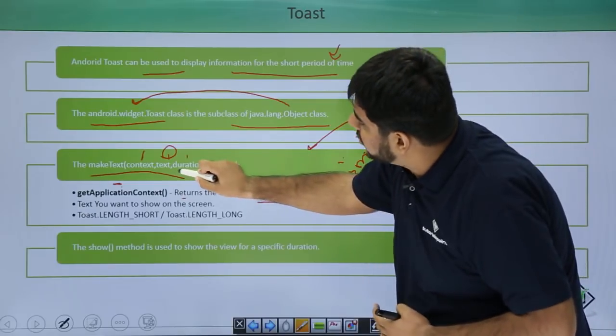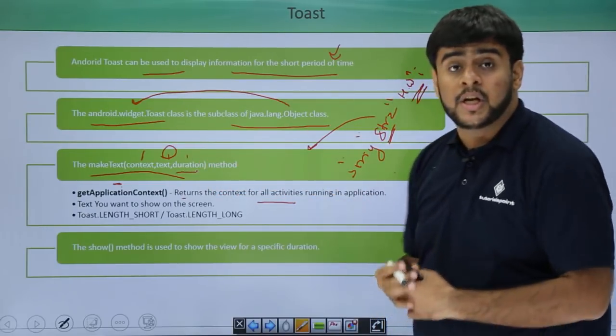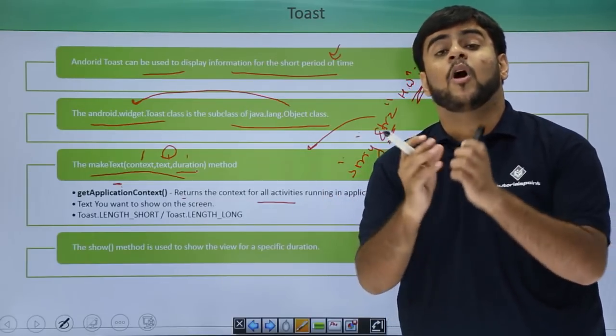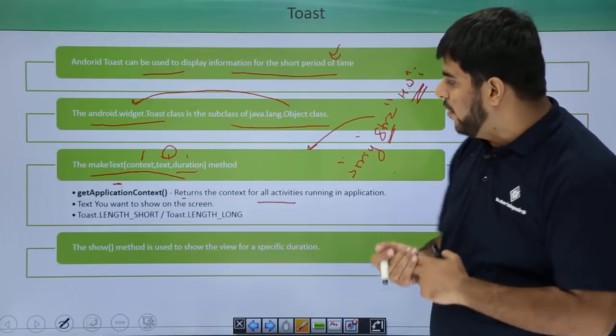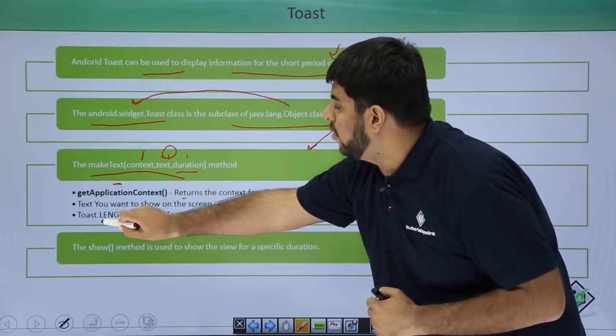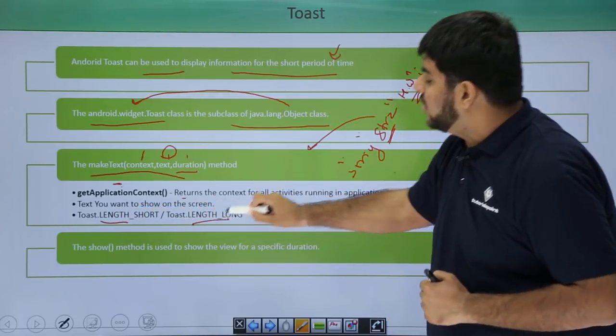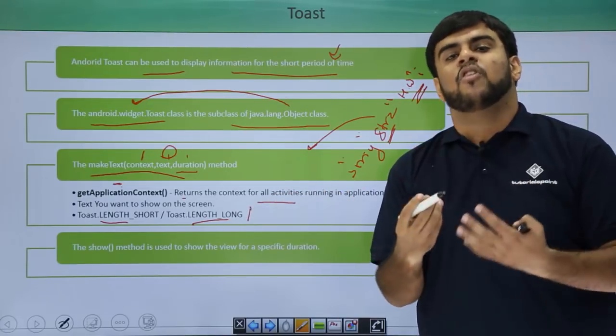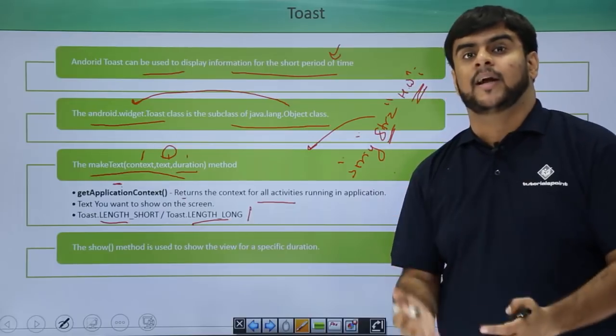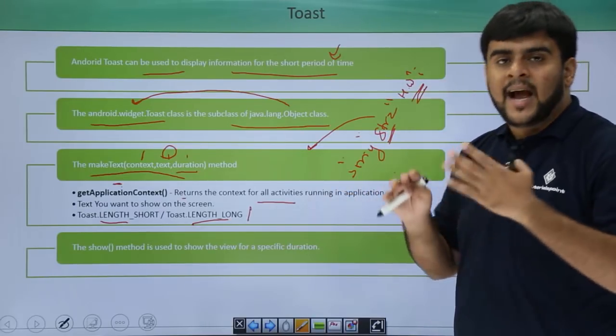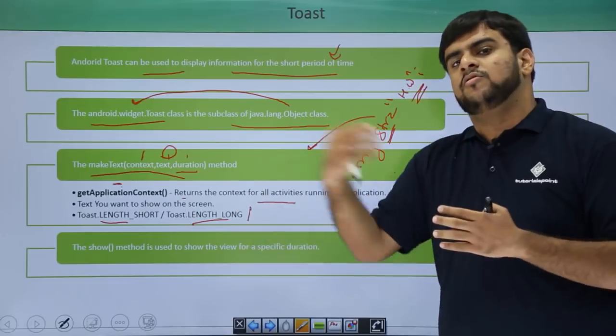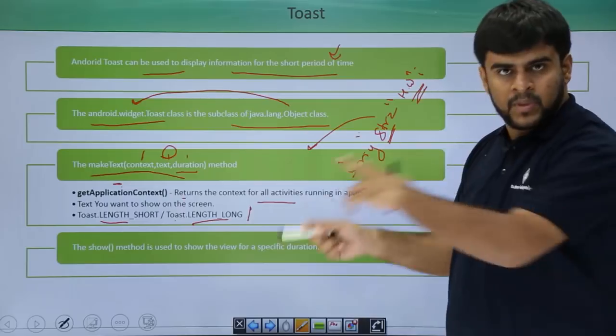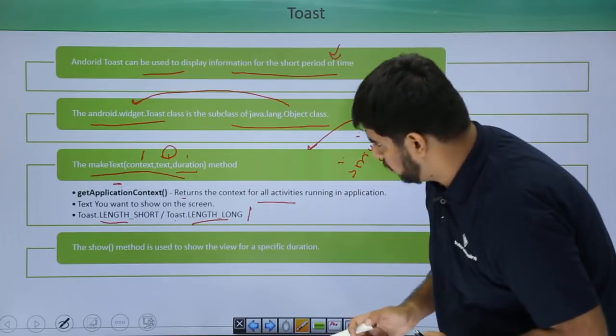The third and the last parameter is duration. What is the duration? Duration is something that is shown to the user for how much time. By default, we are having two durations: length long and length short. Since you can clearly observe that these things are in capital, they mean that they are some constants that have been predefined by the android library.